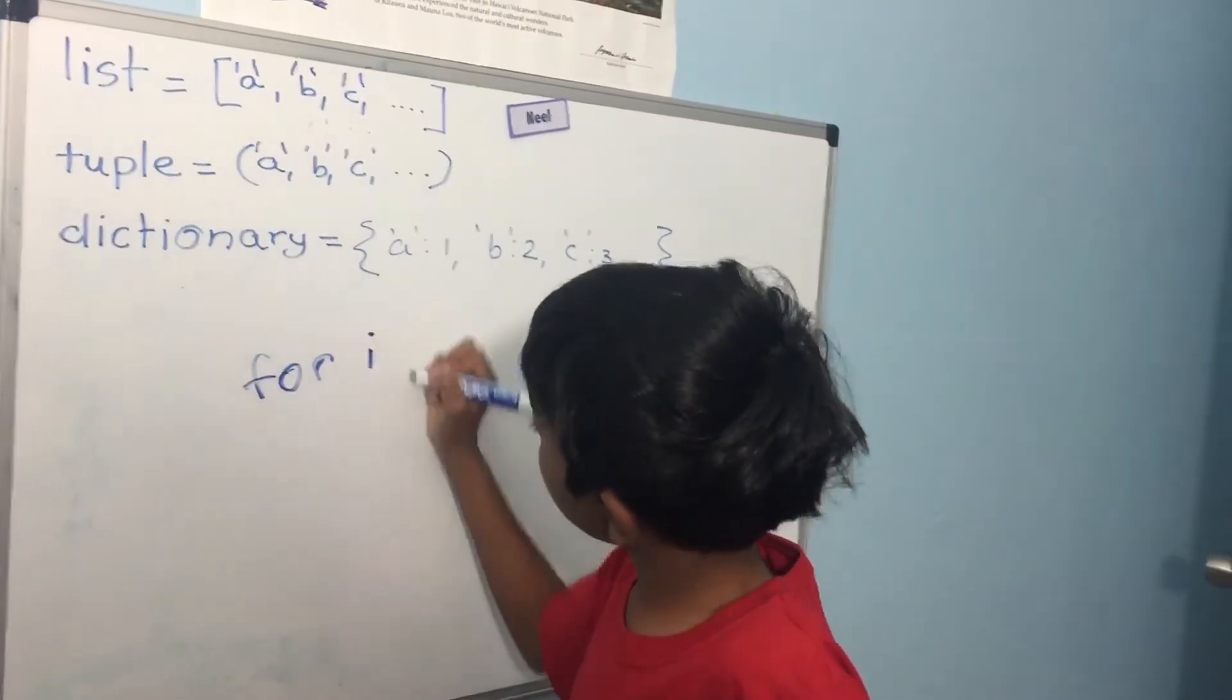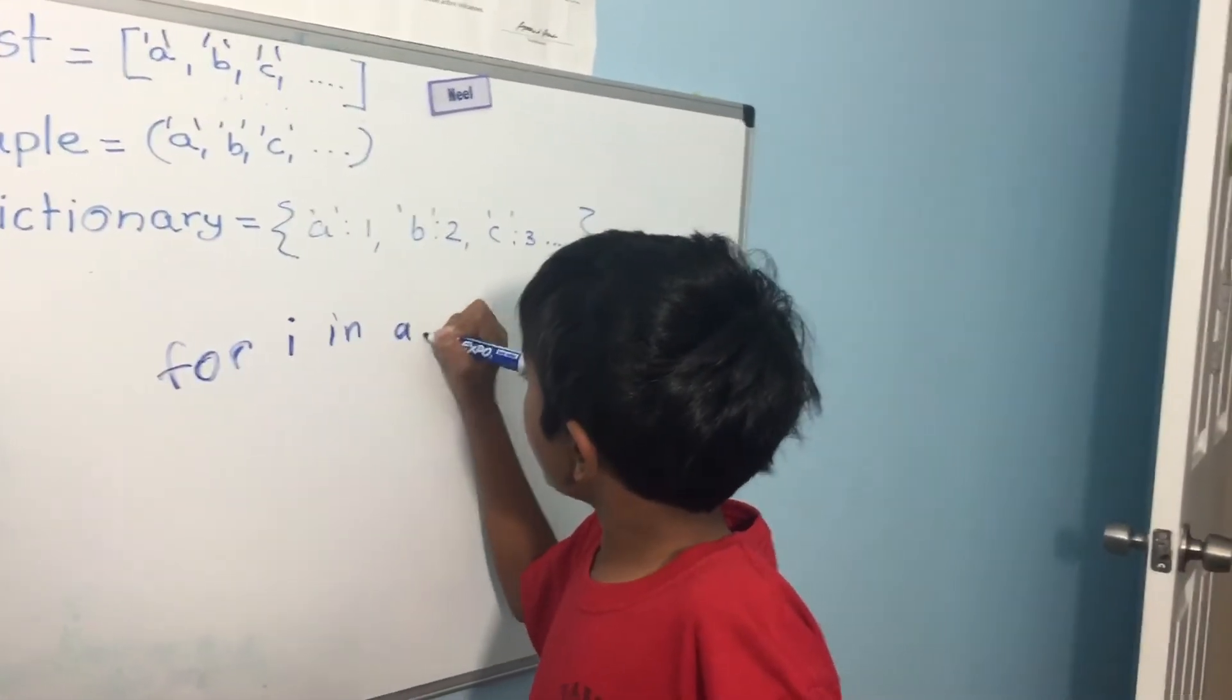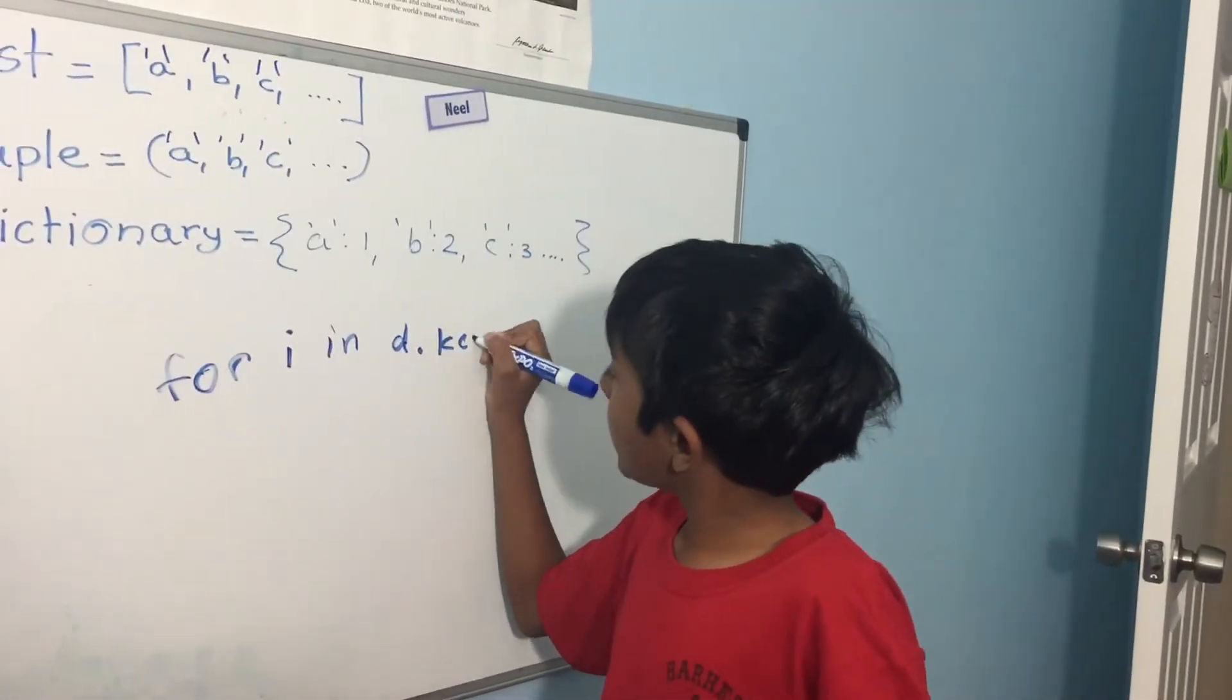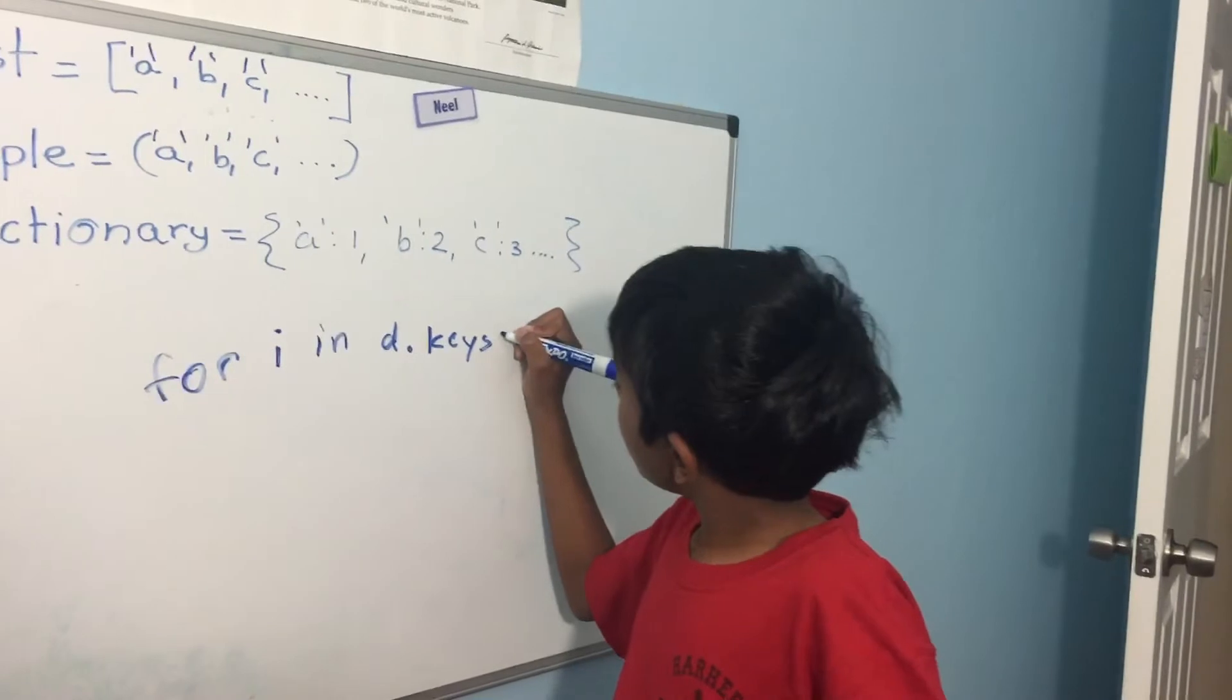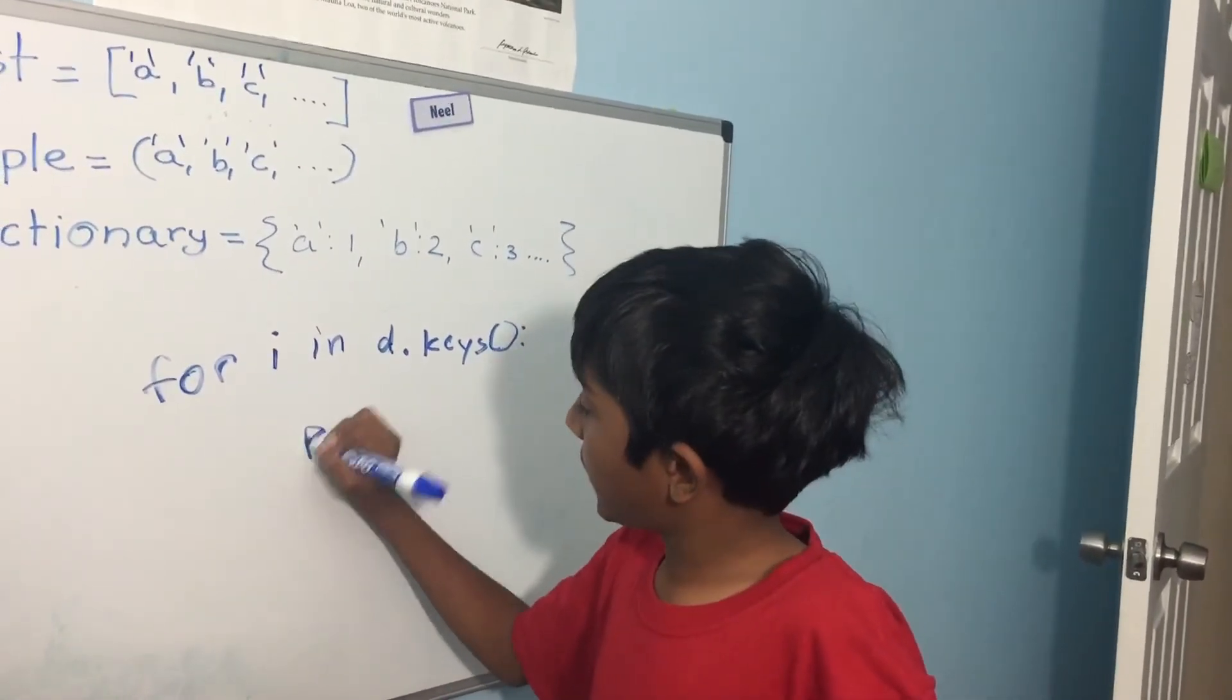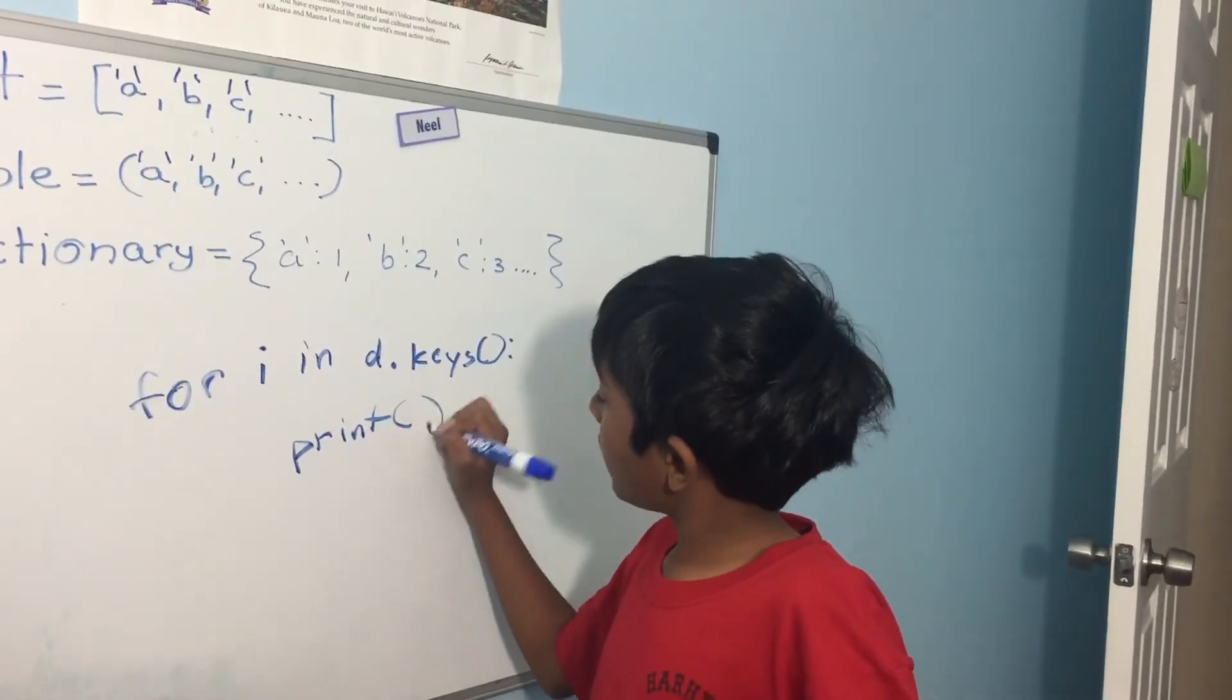You put for any variable in d dot keys, let's say keys and then you print i.